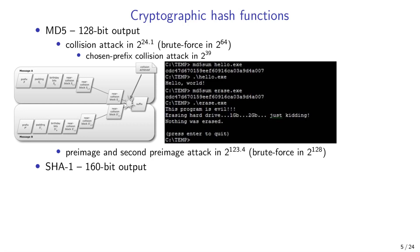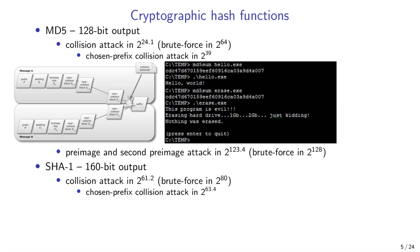Then we have SHA-1 with 160-bit output. While the theoretical security level against collision attacks is 80 bits, Google some years back found the first practical collision using their computing resources, and today the attack requires 2^61 operations. Even without these attacks, the SHA-1 theoretical 80-bit security level is somewhat low for today's standards. In 2020, researchers made the first practical chosen prefix collision attack by performing 2^63 operations — requiring around $100,000. For preimage and second preimage attacks, SHA-1 is still considered secure today.